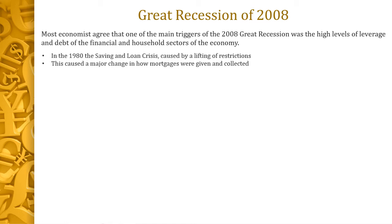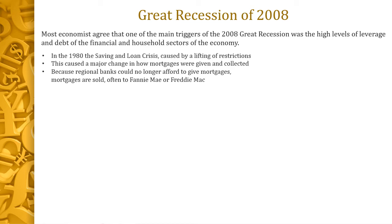A bank makes its money because it gives you, say, one percent interest on your savings but then charges five percent on a mortgage — that four percent in between is basically what they're collecting. As regional banks could no longer afford to give mortgages, the mortgages started to get sold. I would go to my regional bank, apply for a mortgage, and they would help me through the process, but most often the mortgage was sold to two companies: Fannie Mae or Freddie Mac.